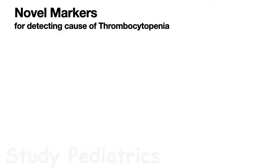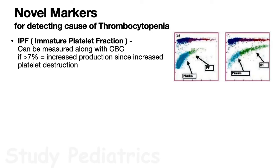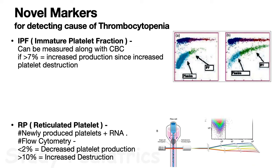Novel markers are being used to understand the cause of thrombocytopenia. IPF, or immature platelet fraction, measures the percentage of newly released platelets in 24 hours and can be measured on a standard CBC machine — similar to reticulocyte count for anemia. Reticulated platelets (RP) are newly produced platelets containing RNA, measured by flow cytometry. An RP less than 2% indicates decreased platelet production, while RP more than 10% indicates increased platelet destruction.